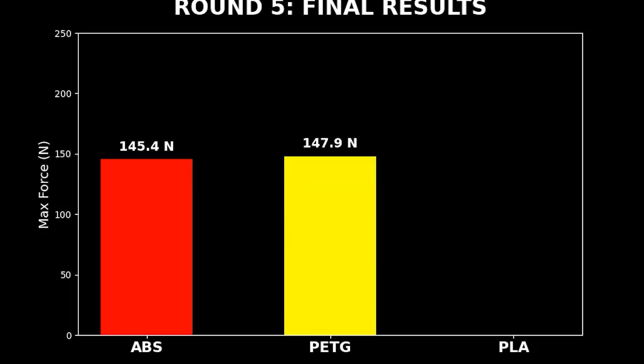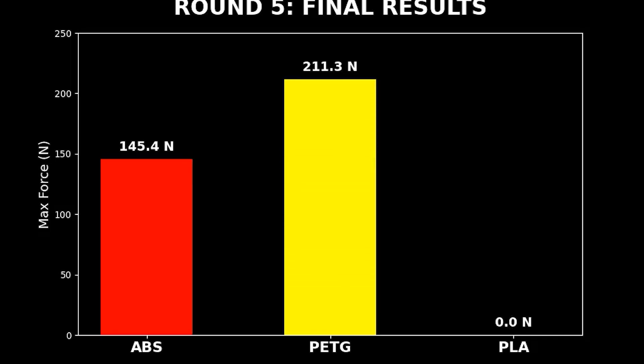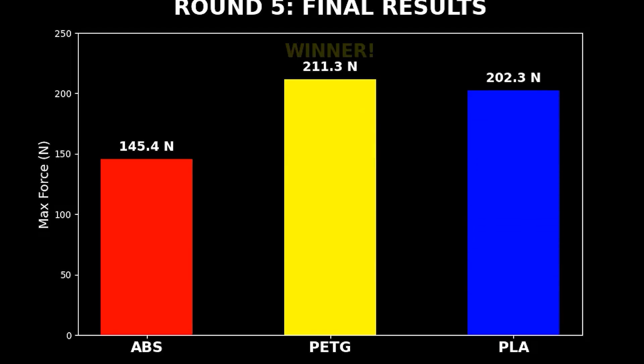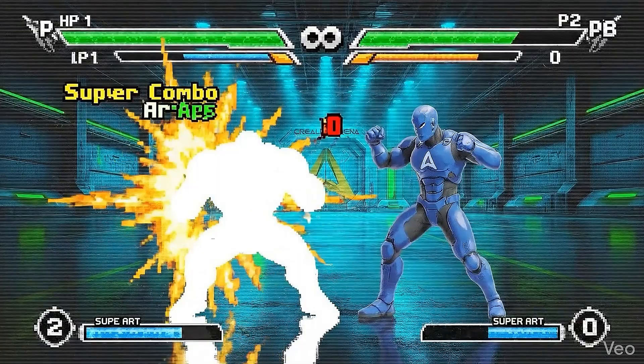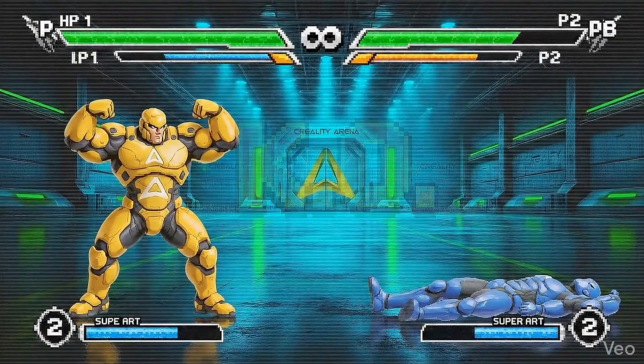Now, PETG. It makes an incredible climb and hits 211 Newtons. And PLA, coming in rock solid, breaking 200, but stopping at 206 Newtons. What a finale. Beating PLA by just 5 Newtons. PETG is the surprise champion of round 5.